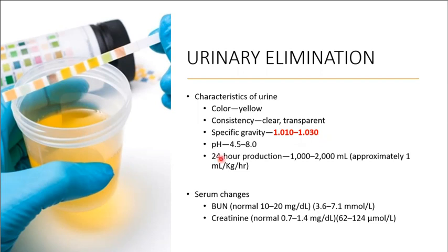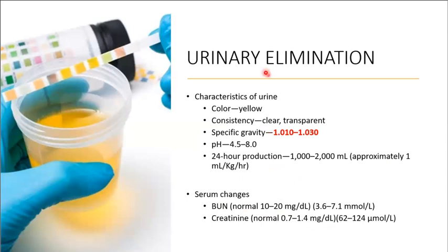Urine pH should be between 4.5 and 8.0. The 24-hour production should be between 1,000 to 2,000 mL, approximately 1 mL per kg per hour. Serum BUN should be between 10 to 20, and creatinine should be between 0.7 to 1.4 mg/dL. Deviations from these values could indicate problems with urinary elimination.